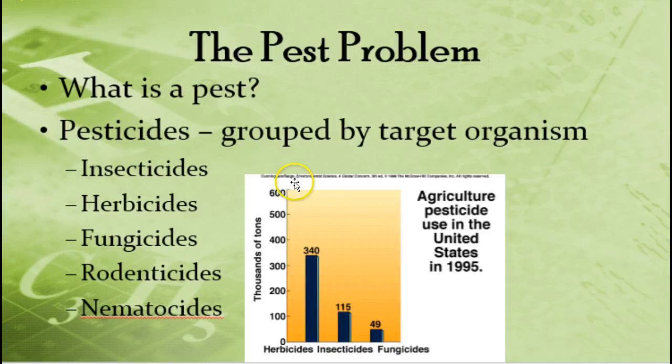An insecticide is going to kill insects. Herbicides are going to kill plants — we're usually particularly trying to kill weeds. Fungicides are going to kill fungi, and a lot of those attack our crop plants. Rodenticides kill rodents like rats and mice. You can see that herbicides are used most widely in the U.S., followed by insecticides, and then the rest are a little bit less common.